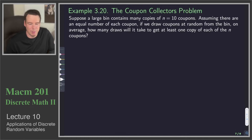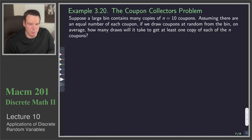This brings us to the last problem under our applications of discrete random variables: the coupon collector's problem. Suppose we've got a large bin that contains many copies of n coupons. For a concrete example, think n equals 10. You can imagine there are infinitely many of each of these n coupons, so no matter how many you've drawn already, there are still more in there. Assuming equal numbers of each coupon, if we draw at random from the bin, on average how many draws will it take to get at least one copy of each of the n coupons?